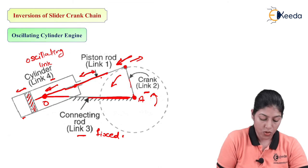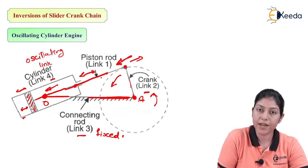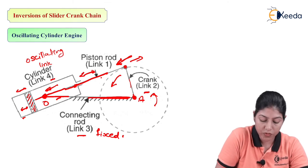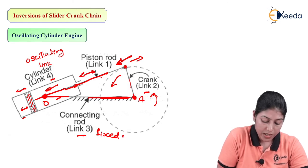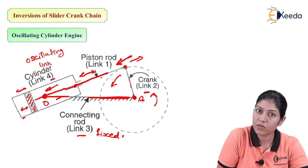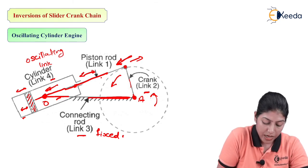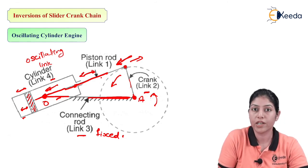Conversely, when the cylinder oscillates, the piston also moves with it. Through the piston rod, this motion tries to rotate the crank in clockwise or anticlockwise direction — so vice versa conversion is also possible. This is the vice versa condition of the oscillating cylinder engine.